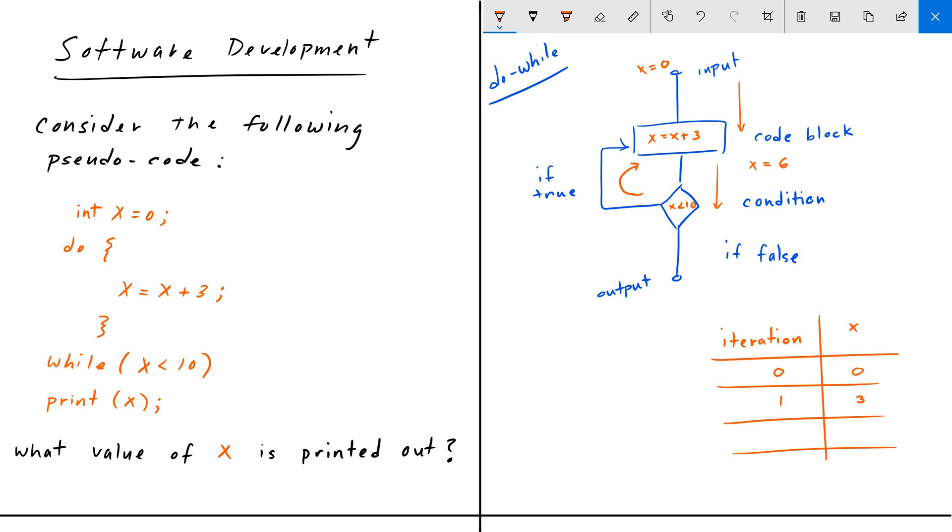And then we go down to the condition again. Is six less than 10? Yes, it is. We go back to the code block statement. So that was our second iteration and we had a value of six.